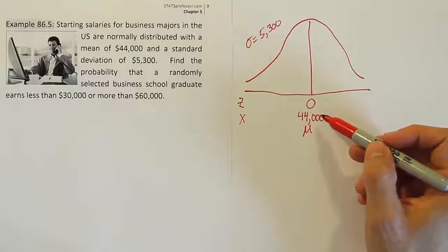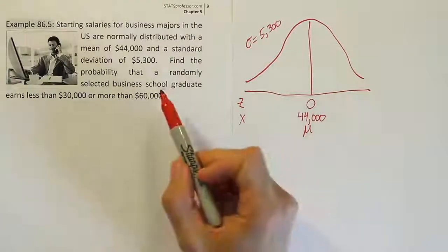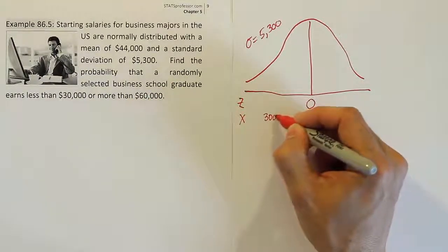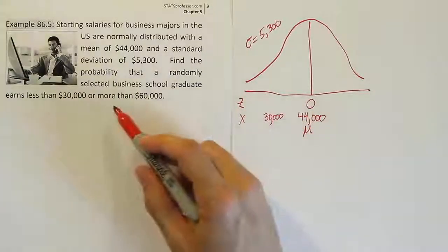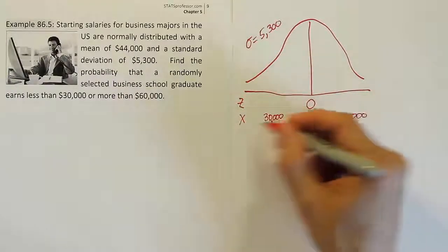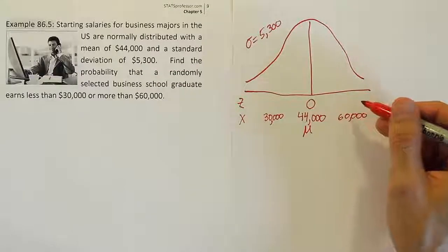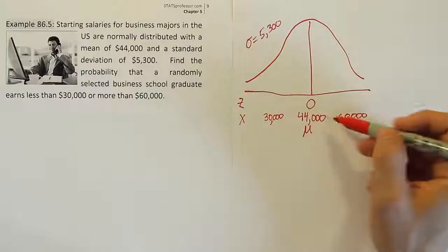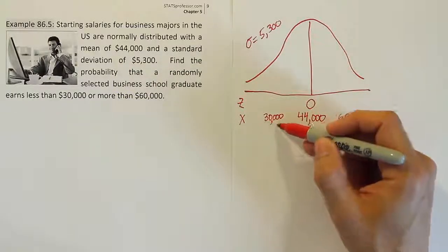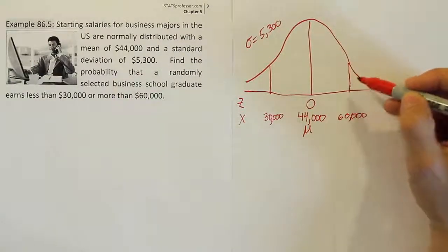What you want to do is put the numbers that they asked us about in this problem on the number line. It says find the probability that a randomly selected business school graduate earns less than $30,000 or more than $60,000. I've put the values on the X-axis. Remember, these are dollar amounts, so they go with the dollar amounts here in the bottom axis. The Z-axis should be reserved for only Z-scores. I've put them where they belong relative to $44,000. $60,000 is greater, so it's on the right. $30,000 is less, so it's on the left.